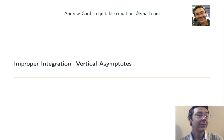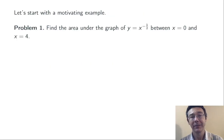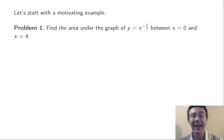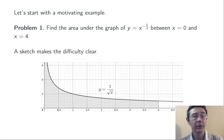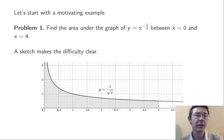Today we're dealing with type 2 improper integrals — the sort where you've got a vertical asymptote or other discontinuity at one of the endpoints. Like in this example: find the area under the graph of y equals x to the negative one half between x equals 0 and x equals 4. Here's the picture. You can see the problem right away. At x equals 0, we've got a vertical asymptote. It's not clear whether that shaded area is even going to be finite.